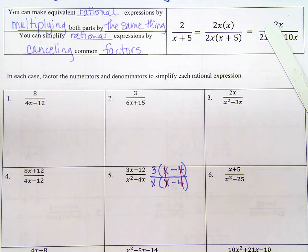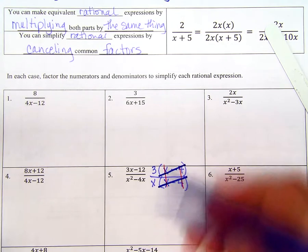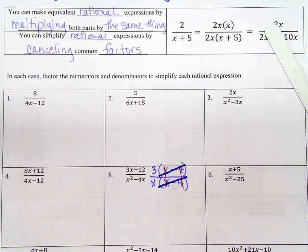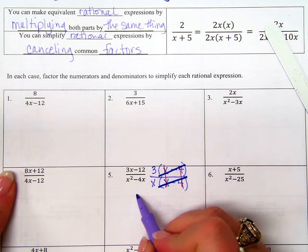What about the denominator? What do both of these two terms have in common? X? If I factor out an X, what do I have left in the denominator? X minus 4, right? Now, if, capital if, I was a ridiculous little child, I would cancel the X's and cancel the 4's.